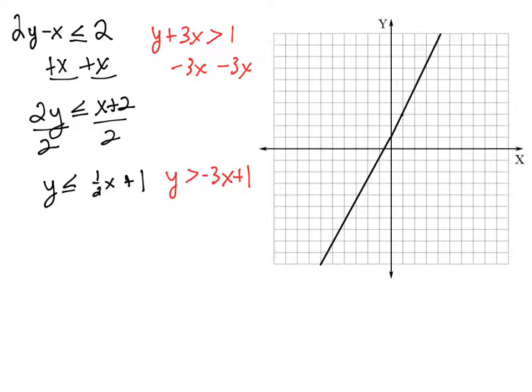The second line has a slope of negative 3 over 1. So we're going to go down 3, right 1, and we're going to start at a y-intercept of 1.